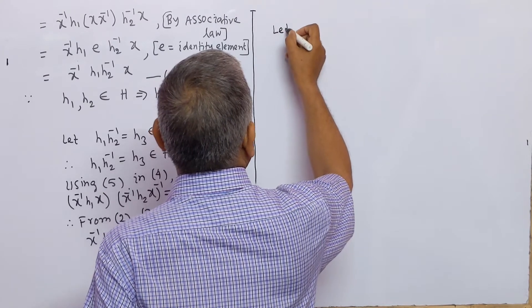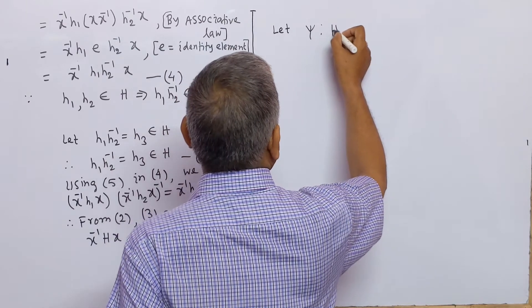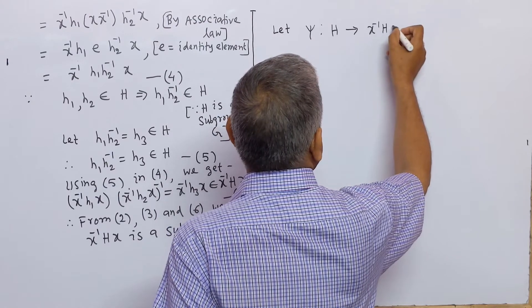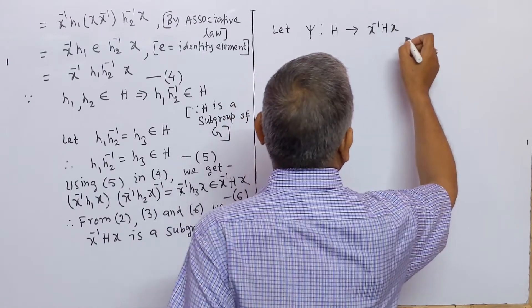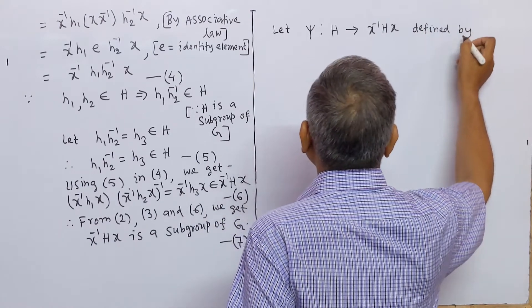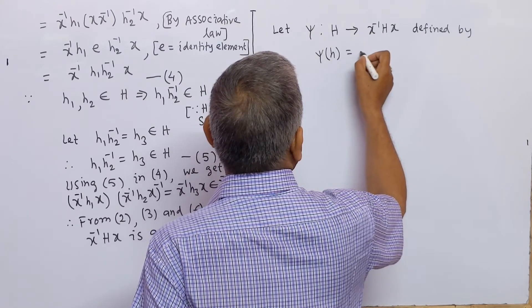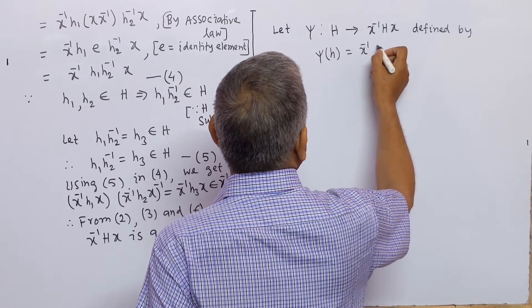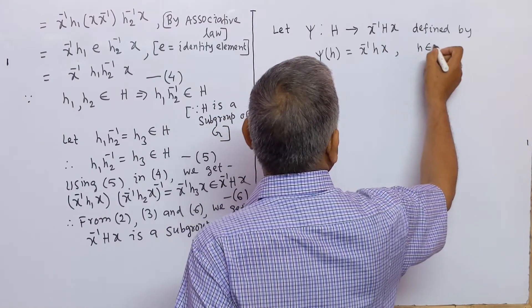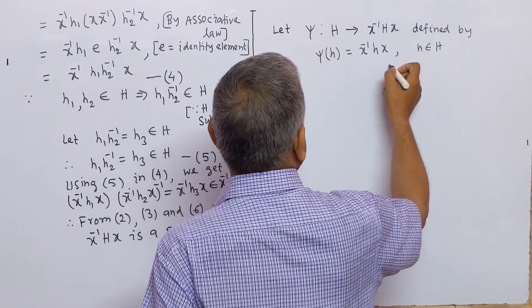Let Ψ be a mapping defined from H into x inverse Hx, defined by Ψ(h) = x inverse h x, for h belonging to H.